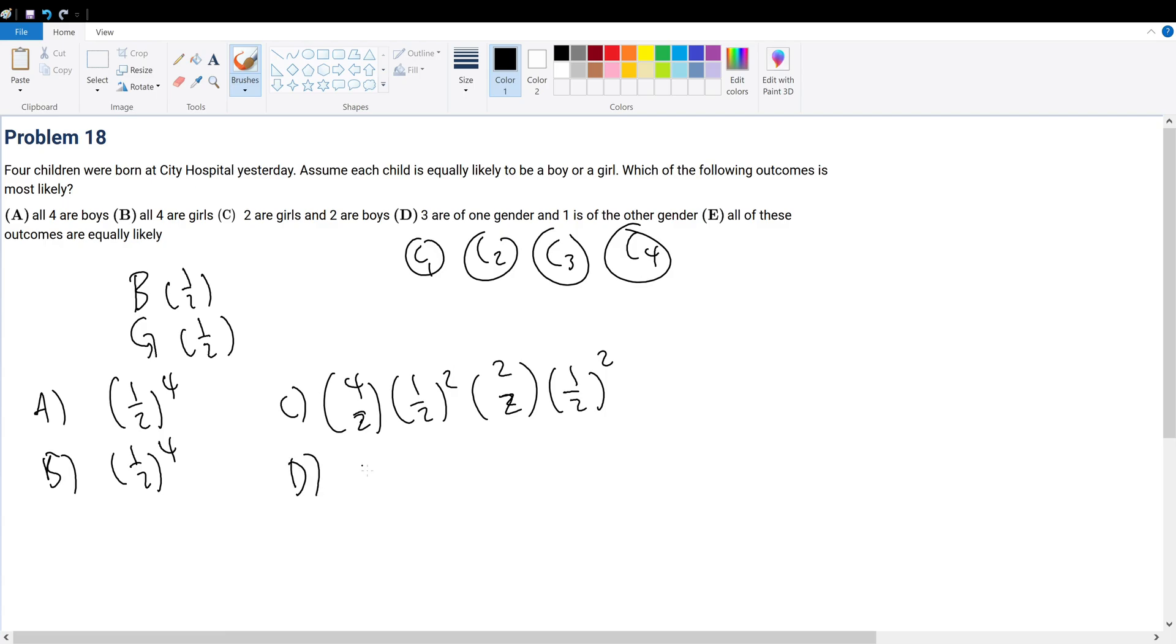Choice D. Three are one gender. Let's assume it's a girl. I pick three from the 4 to be girls, right?